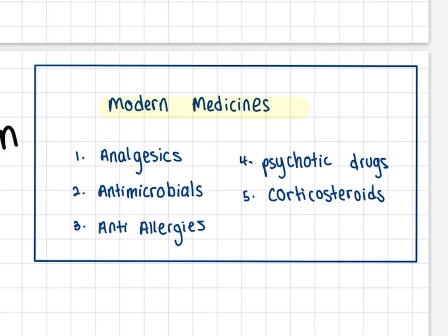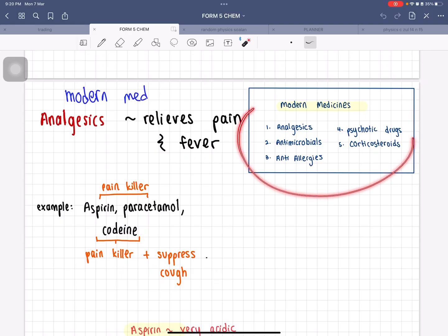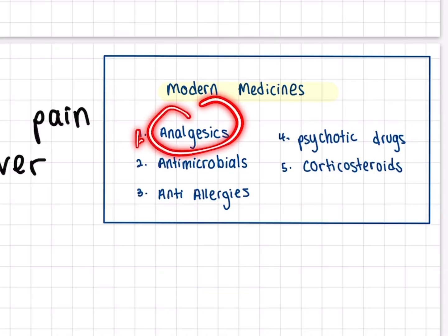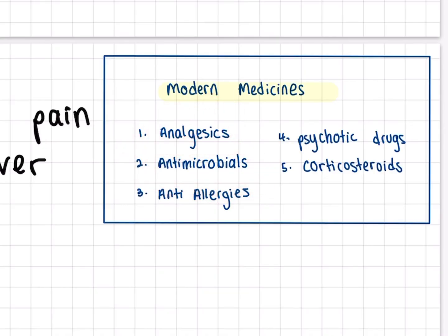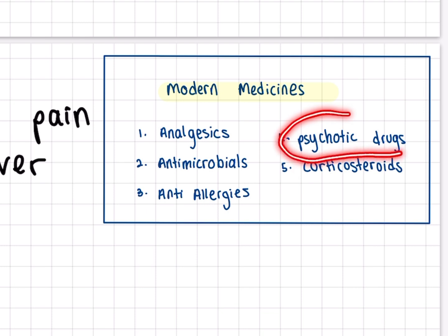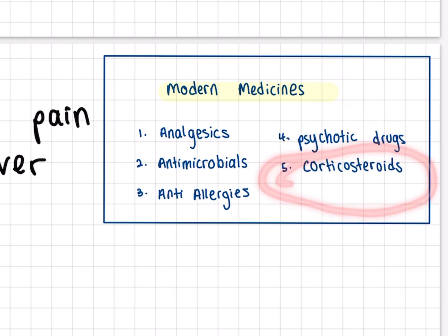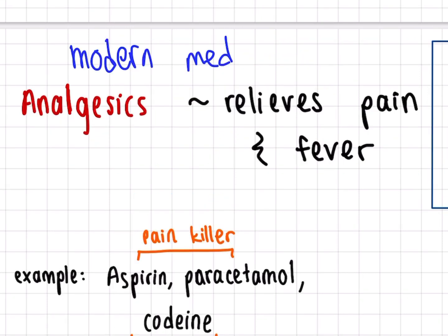We have five types of modern medicines in our syllabus: number one is analgesics, number two is antimicrobials, number three is anti-allergy, number four is psychotic drugs, and number five is corticosteroids.